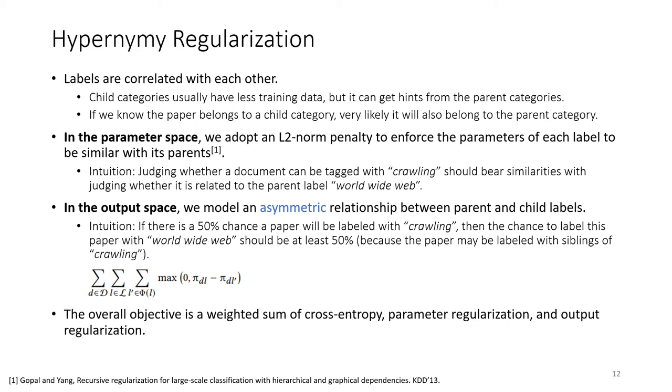In the parameter space, inspired by the first idea, we adopt an L2 norm penalty to enforce the parameters of each label to be similar with its parents. The intuition here is that judging whether a document can be tagged with 'crawling' should bear similarities with judging whether it is related to the parent node 'World Wide Web.'